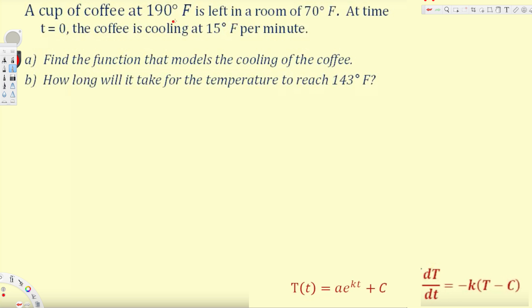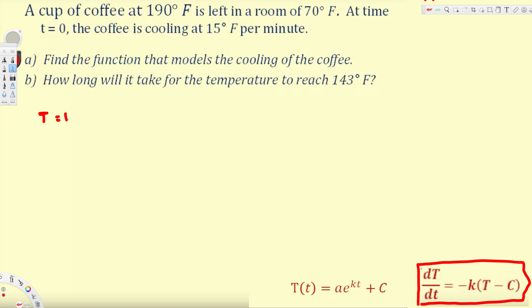Now let's list all the given information. The generic equation for Newton's law of cooling is dT/dt = -k(T - C), where dT/dt is the temperature change with respect to time, k is a constant, T represents the temperature of the cooling object, and C represents the temperature of the surrounding. Here we have 190 degrees Fahrenheit as the temperature of the cooling object, so T = 190°F. The room temperature is 70 degrees Fahrenheit, so C = 70°F.